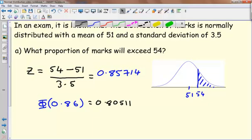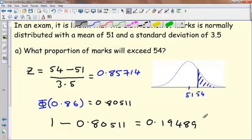So using the fact that a normal distribution always has a total area of 1, the area I want is 1 minus 0.80511, and that's 0.19489, which you would probably round to three significant figures. And that's it for this time.